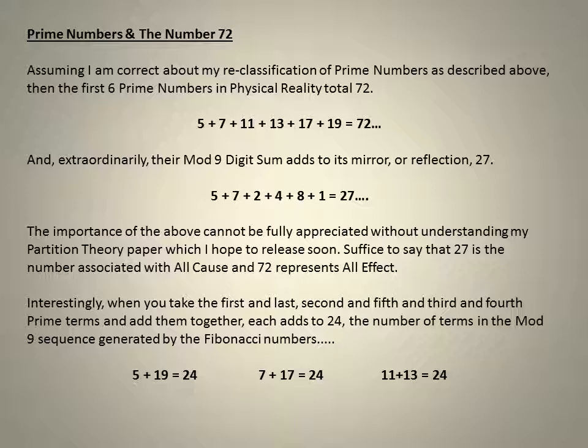Prime numbers and the number 72. Now, assuming I'm correct about my reclassification of prime numbers as described above, then the first six prime numbers in physical reality total 72. 5 plus 7 plus 11 plus 13 plus 17 plus 19 gets you 72. And extraordinarily, their mod nine digit sum adds to its mirror or reflection, 27.